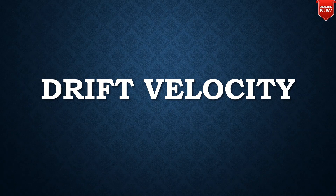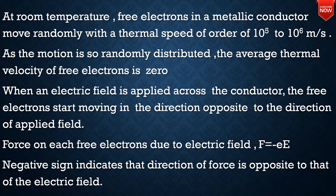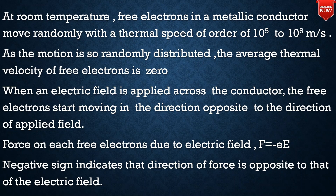Welcome to our channel. Today we are discussing drift velocity. At room temperature, free electrons in a metallic conductor move randomly with a thermal speed of order 10^5 to 10^6 meters per second. As the motion is randomly distributed, the average thermal velocity of free electrons is zero. When an electric field is applied across the conductor, the free electrons start moving opposite to the direction of the applied field. The force on each free electron due to the electric field is F = -eE. The negative sign indicates the direction of force is opposite to the electric field.